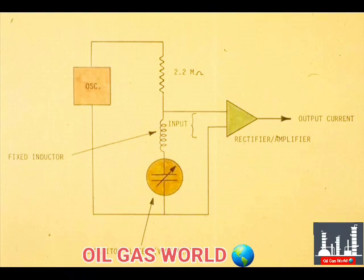The oscillator output goes through a 2.2 megaohm resistor, the inductor, and the capacitor plates. When the oscillator current decreases, the voltage drop across the resistor decreases, allowing a higher voltage to be across the inductor and capacitor. The increased voltage results in an increase in amplifier output current.